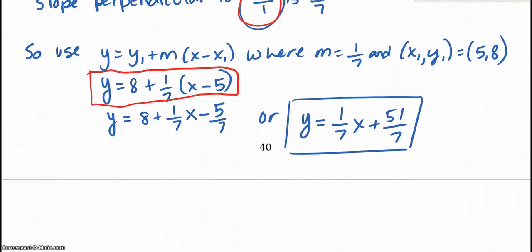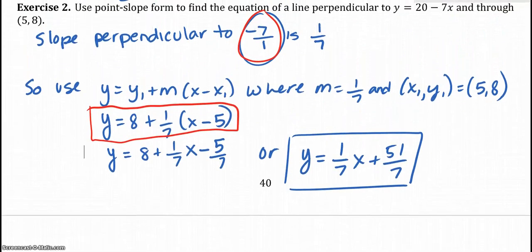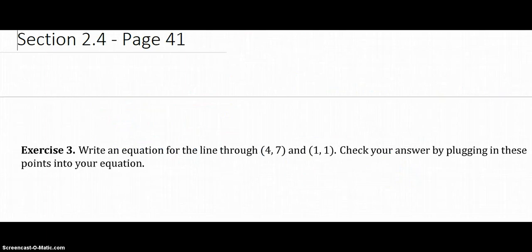Let's move on to exercise 3. So now pause it, try exercise 3 on the next page. Exercise 3 is on page 41, and it says write an equation for the line through (4, 7) and (1, 1). Actually, I've done this before in the last section, so there's nothing new here. So go ahead and try that. Pause me and come back when you have solved that one.